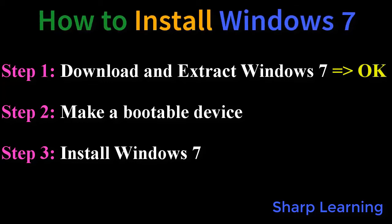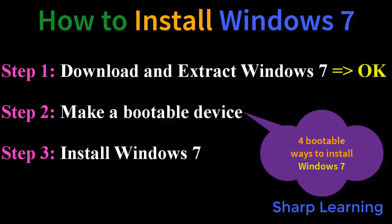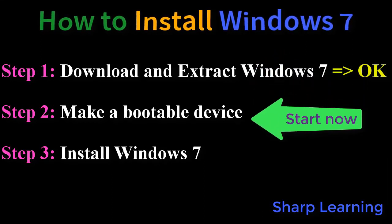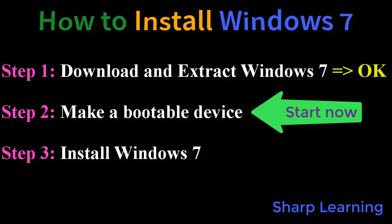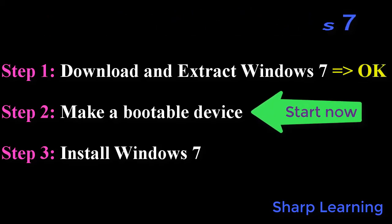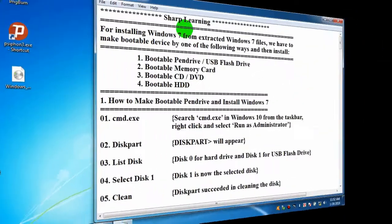How to install Windows 7. Step 1: download and extract Windows 7 — we have already downloaded and extracted the files. Step 2: we have to make a bootable device. Then step 3: we have to install Windows 7.